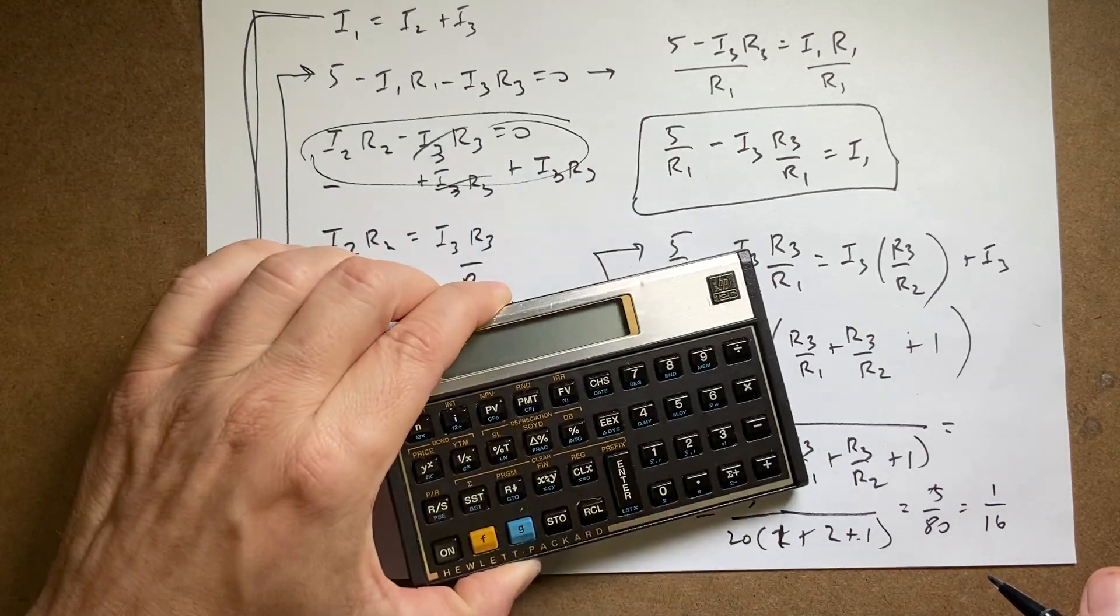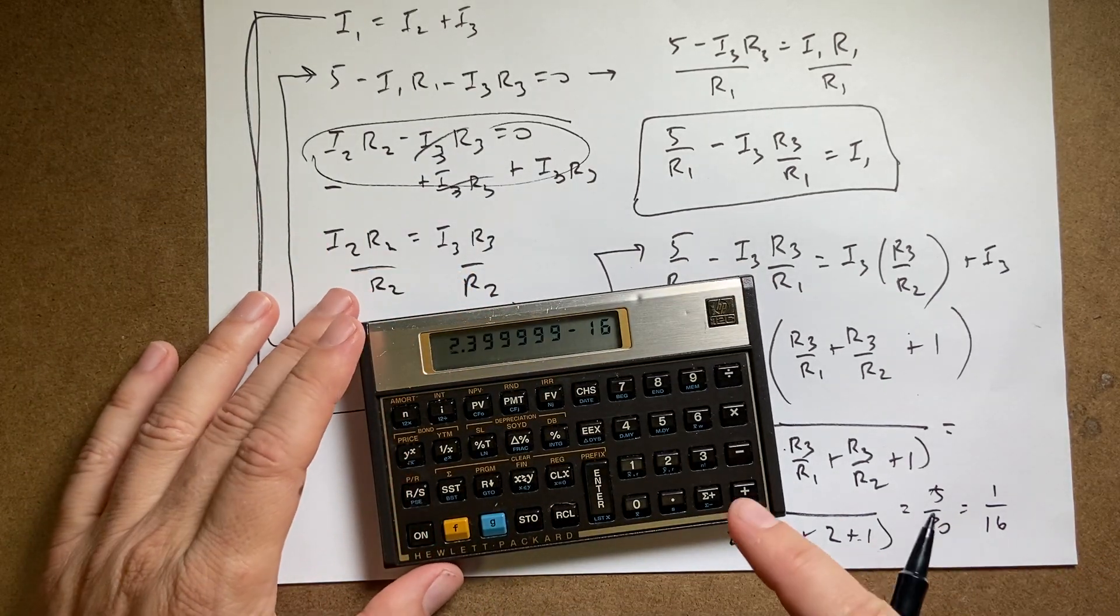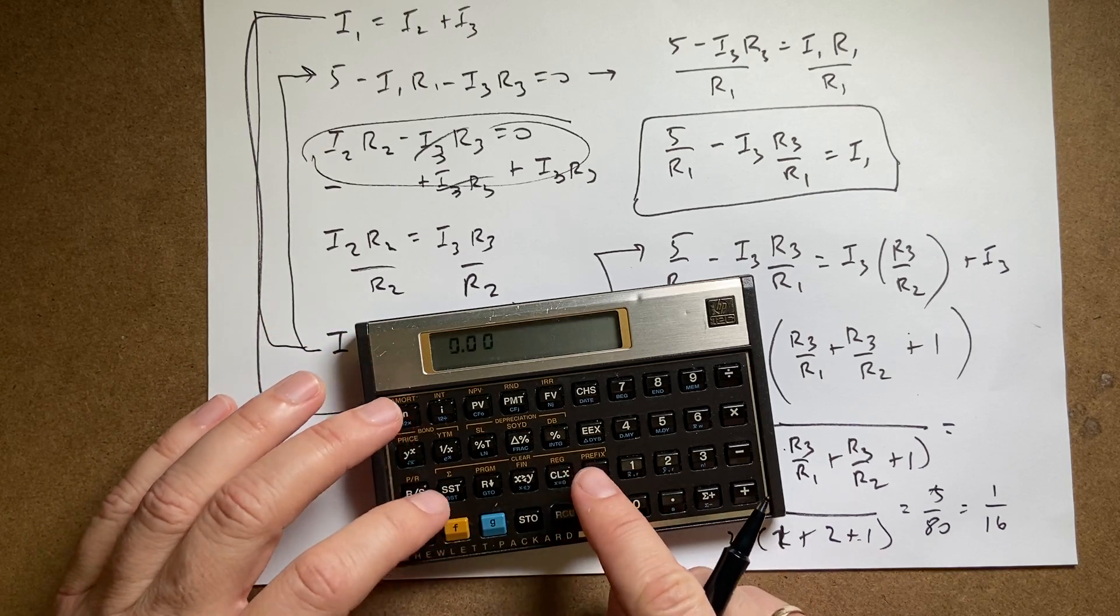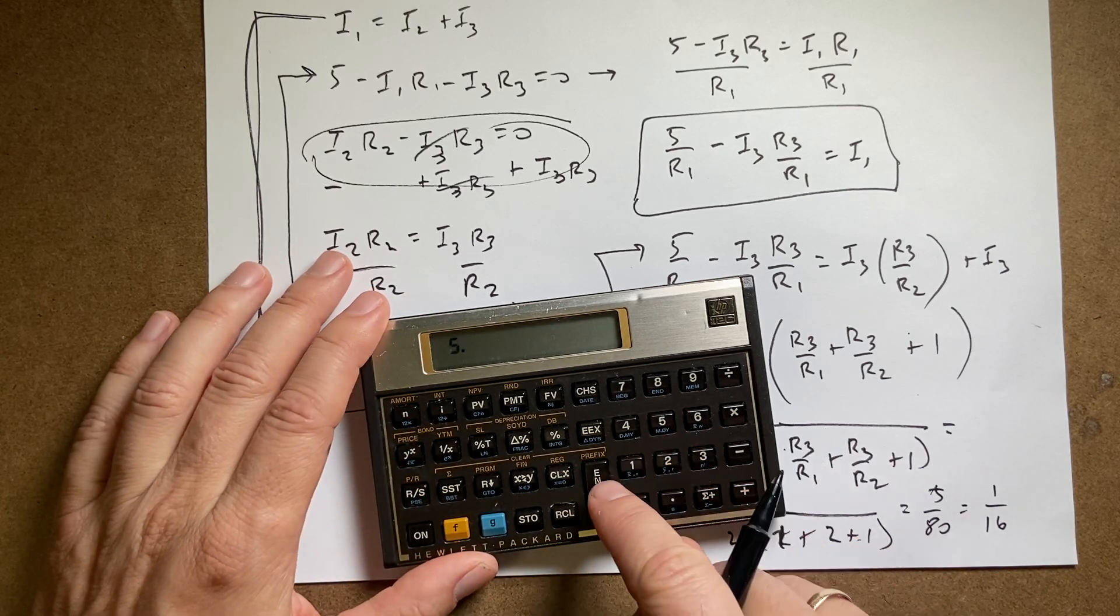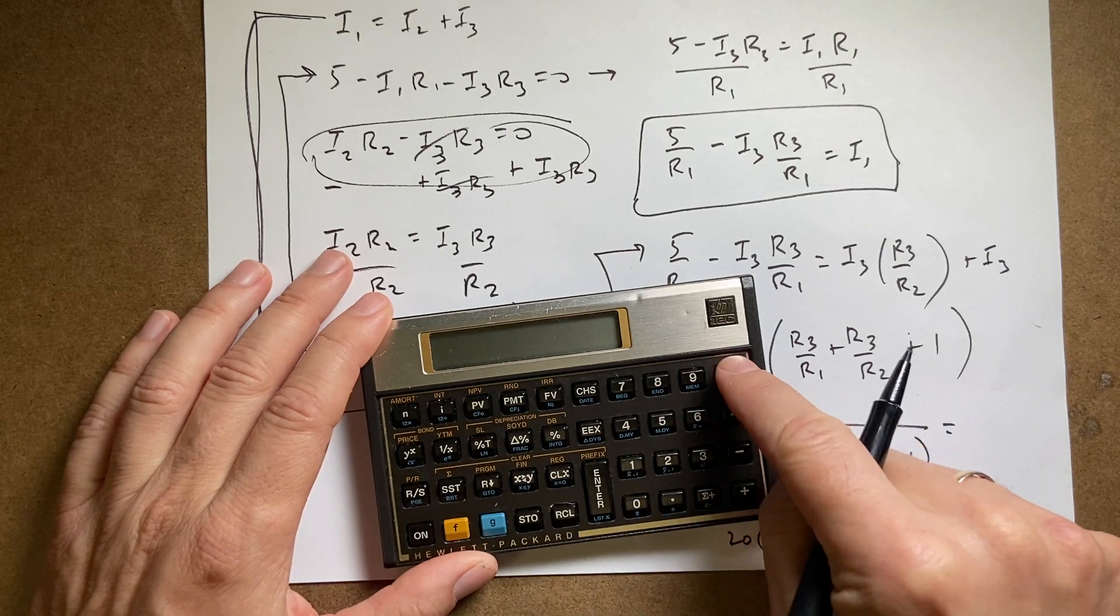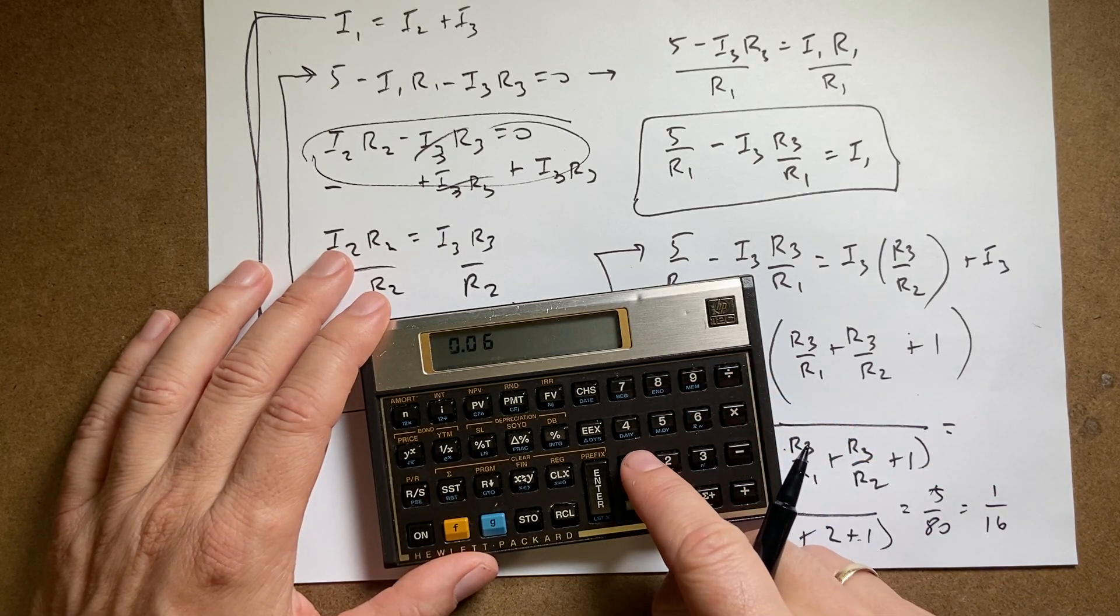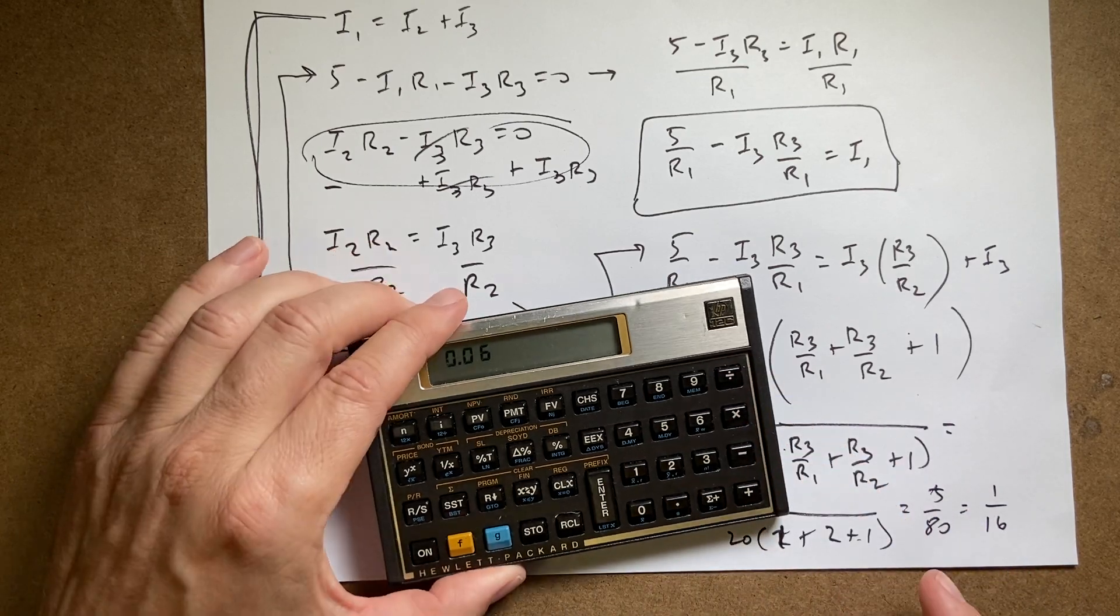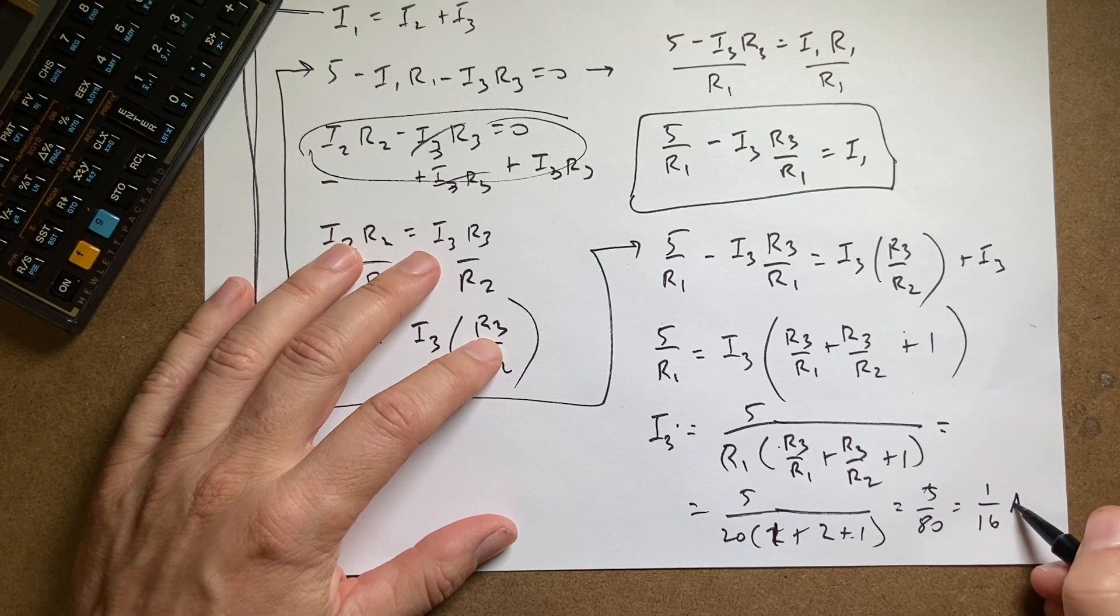I feel dumb. Sometimes you just, sometimes your mind draws a blank, right? So I'm going to just double check. So 5 enter 80 divided by, so point, that is, so 1 enter 16 divided by. Yep. Okay. I was right. So that's I3 amps.